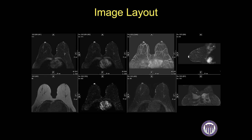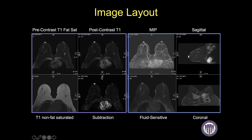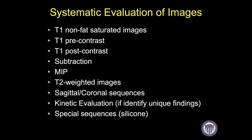For systematic evaluation of images, I will show you a method of reviewing the sequences with the layout we use at the University of Washington. In general, we have pre- and post-contrast images on the top left, T1 non-fat saturated images on the bottom left, subtraction images next to that, and on the right-hand side, the maximum intensity projections or MIPs, sagittal and coronal images, and our fluid-sensitive sequences. Everyone has their own algorithm, but you need to be systematic and consistent.